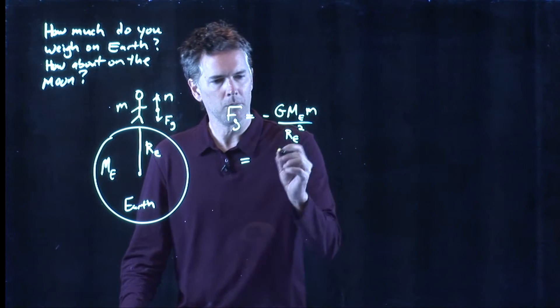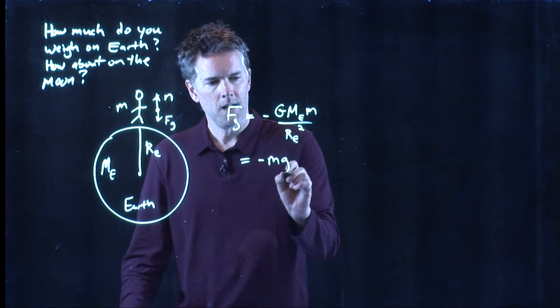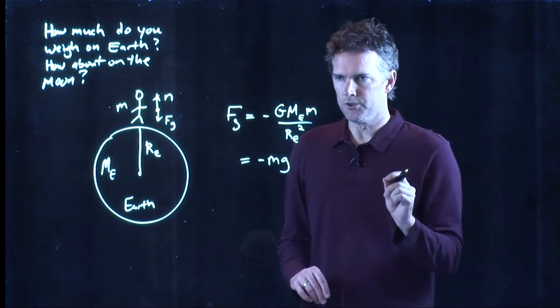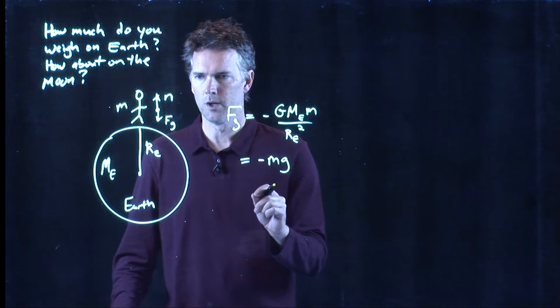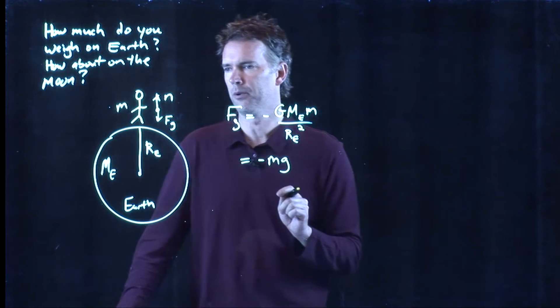And we plugged in those numbers, and what we saw was that is negative m times little g, which we know, right? Little g is 9.8 meters per second squared.